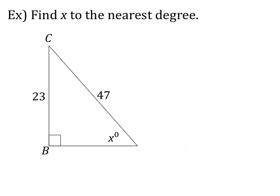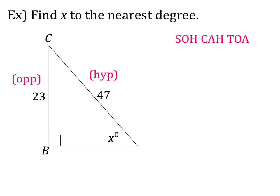Now for this example, find x to the nearest degree — pause the video and try to find this one on your own. Label the relationship between the angle and the sides: x has an opposite relationship with 23, and a hypotenuse relationship with 47. Finish this problem on your own and we will check it together in class.